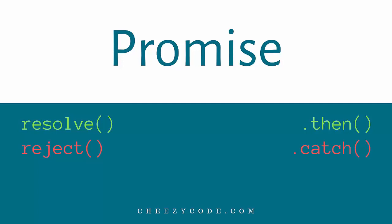In real life people make promises — a person says 'I promise you that I'll do this work for you.' So either he keeps his promise and performs the work, or he fails to do it. Similarly in JavaScript, when we have a task to perform asynchronously, we create a promise, and once the task is completed we send the result status.